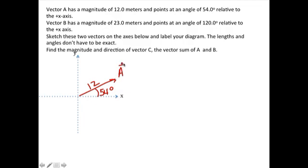The second step is to take the second vector and draw that. Vector B has a magnitude of 23 meters and points at an angle of 120 degrees relative to the positive x-axis. That means it's going to stick off in a direction kind of like this, and it's going to be a bit longer. So here's vector B with a length of 23 and an angle of 120 if you measure it from the x-axis. You might note that this angle is 60 degrees.